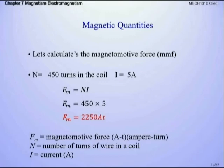As we increase the number of turns and increase the current, that field gets larger and larger — it's a direct relationship. As turns go up and current goes up, the magnetomotive force also increases. So if we want a stronger field, we add more turns. We'll experience that when we do our Tesla coils.